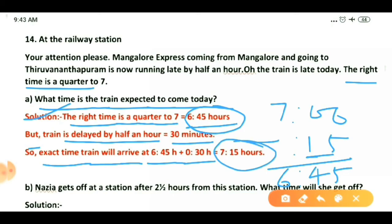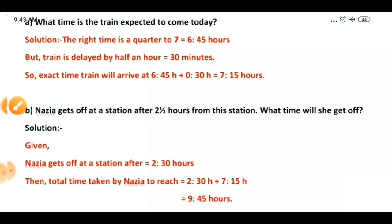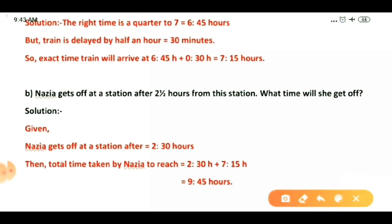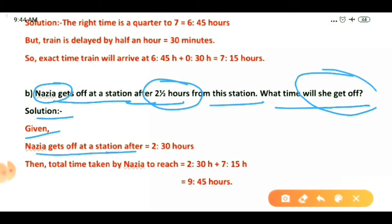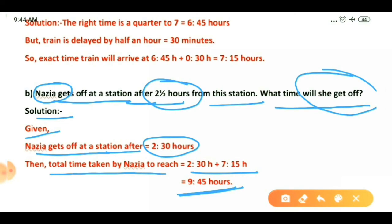The train is now arriving at 7:15. The second question: Nausea gets off at a station after two and a half hours from this station — what time will she get off? Given: Nausea gets off after 2 hours and 30 minutes, that is 2:30 hours. Adding: 2:30 plus 7:15 gives a total of 9:45 hours. That is the time Nausea will get off the train.